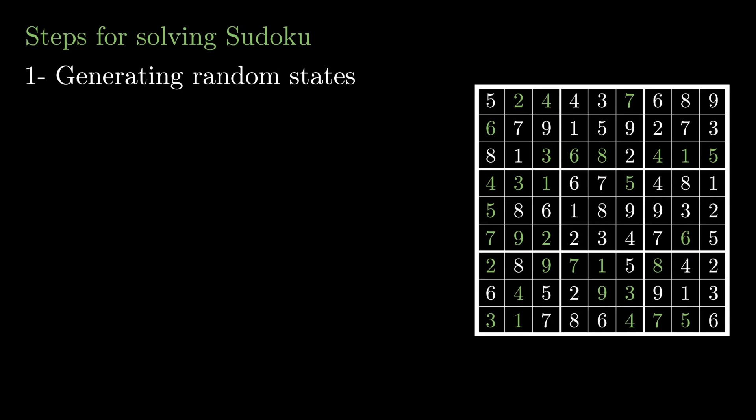If you look at the picture in the right, there are numbers that are green and white. The green numbers are fixed values that are given when we are trying to solve a Sudoku and we cannot move those. And the white ones are random numbers that I put in there and that we can move around. The way that I fill these random numbers is by putting unique numbers in the three by three squares, which means that we'll have duplicates only among the columns and the rows.